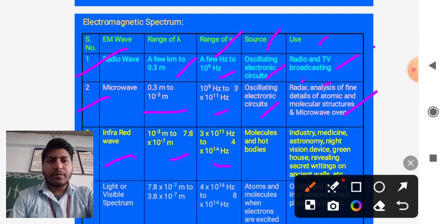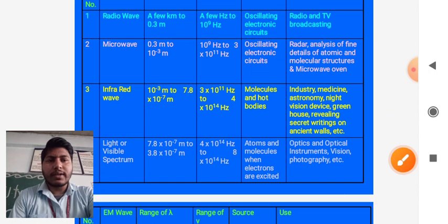The source from which it produces: molecules and hot bodies. The uses of electromagnetic spectrum include industry machines, astronomy, night vision devices, greenhouse, and revealing secret writings on ancient walls.